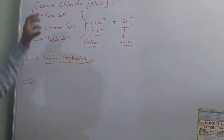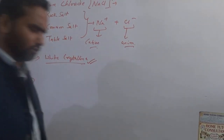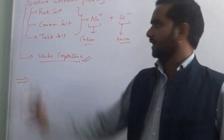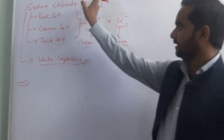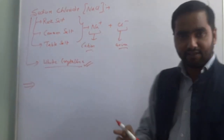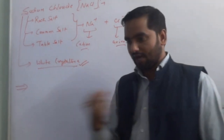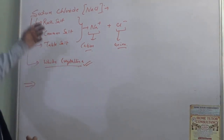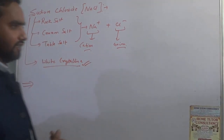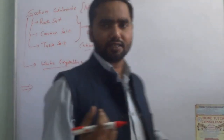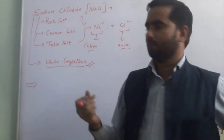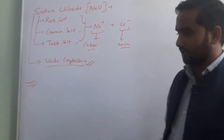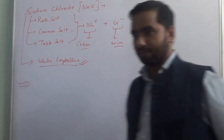Sodium chloride, called NaCl, is known as common salt. It is also called rock salt, as it is a chloride of sodium, and also called table salt. These are all names for NaCl.